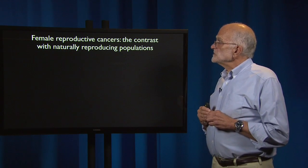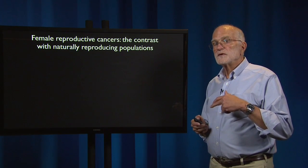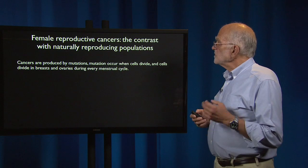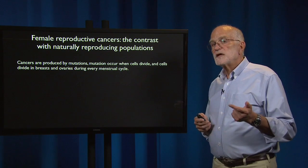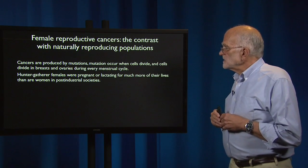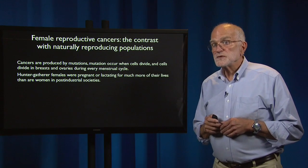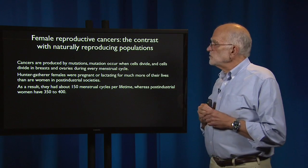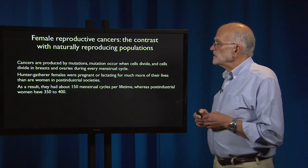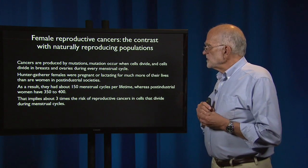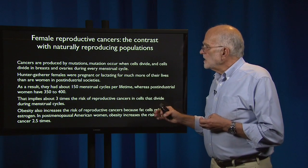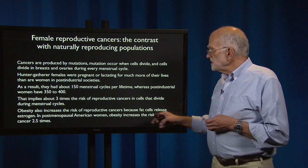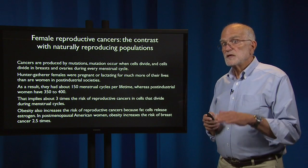What about female reproductive cancers? We can learn something by contrasting contemporary populations with naturally reproducing populations. Cancers are produced by mutations, and mutations occur when cells divide — and cells divide in breasts and ovaries during every menstrual cycle. Naturally reproducing women could expect about 150 menstrual cycles per lifetime, whereas a post-industrial woman can expect 350 to 400, implying about three times the risk of reproductive cancers. Obesity also increases the risk of reproductive cancers because fat cells release estrogen, and in post-menopausal American women, obesity increases the risk of breast cancer 2.5 times compared with women who are not obese.